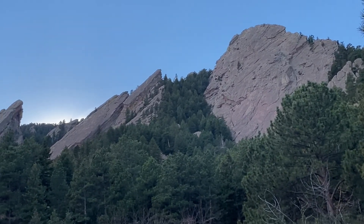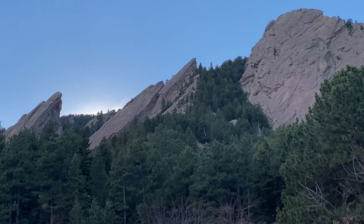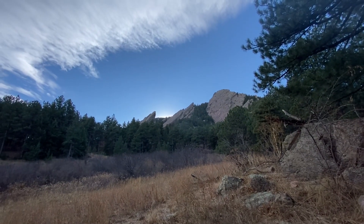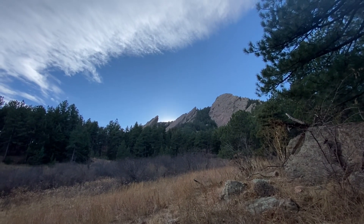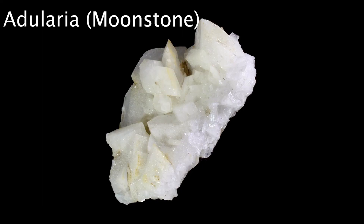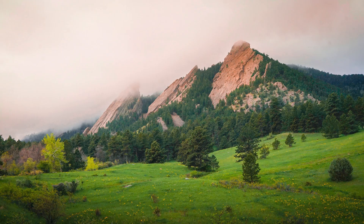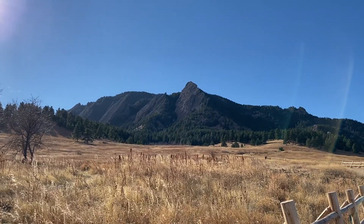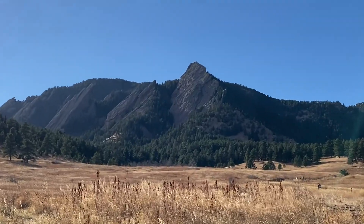But why do we only see the Fountain Formation show itself in certain areas, such as the Flatirons? This is because of a local, potassium-rich cement that is deposited only in the Boulder area called Adularia, also known as Moonstone if it's in gem quality. This helped hold the Flatirons together, while the rest of the Fountain Formation in neighboring regions was eroded away. Now you know the geologic history of the Flatirons. Thank you for watching.